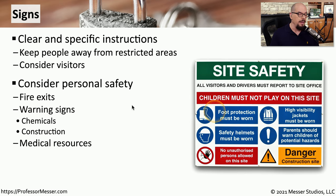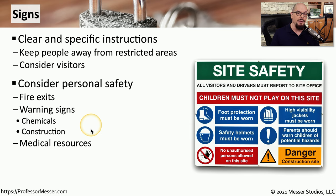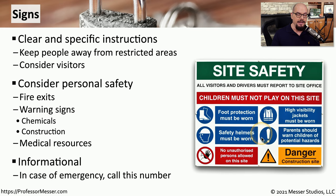Signs for personal safety may provide information about fire exits. There may be warning signs that describe where there may be chemicals or other types of construction going on. It may also be useful to point people towards medical resources or first aid kits. And although a sign doesn't have any contact information, it might be useful to add some contact details, especially if there are any emergencies.